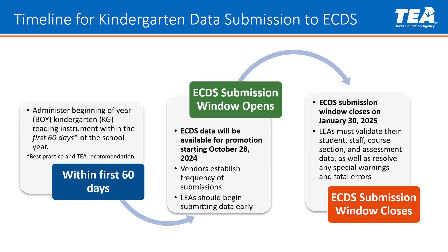On the screen you can see the timeline for kindergarten data submission to ECDS. It is best practice and a TEA recommendation that within the first 60 days of school, the beginning-of-year kindergarten reading instrument is administered to all kindergarten students. The ECDS submission window will open by November of 2024 to allow LEAs and vendors to upload kindergarten data. Vendors will establish the frequency of submission and LEAs are highly recommended to begin submitting data early. The window will close for kindergarten data submissions on January 30, 2025. LEAs must validate their student, staff, course section, and assessment data, and resolve any special warnings and fatal errors in order to complete the submission.